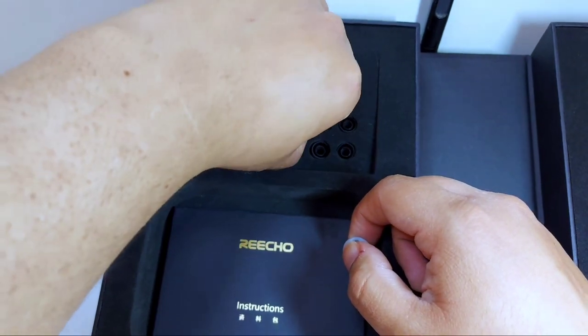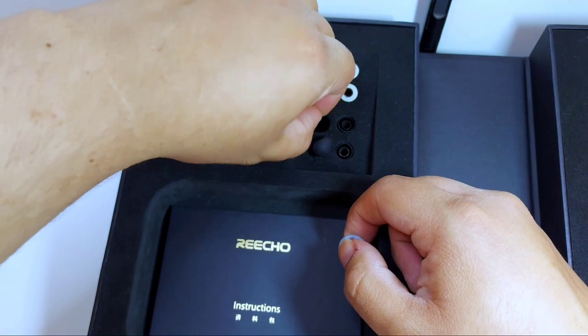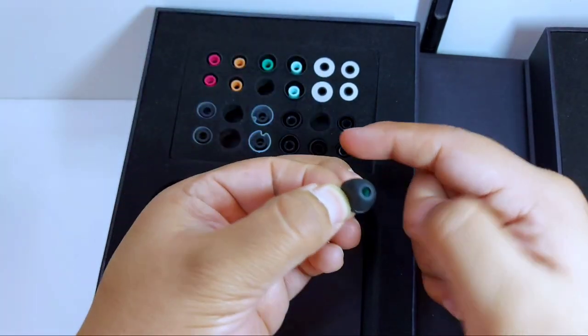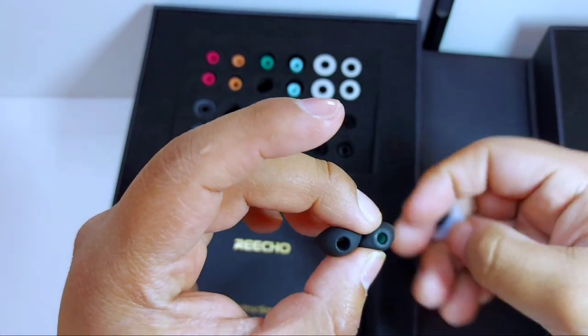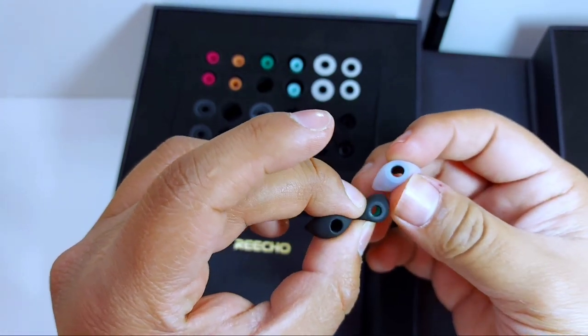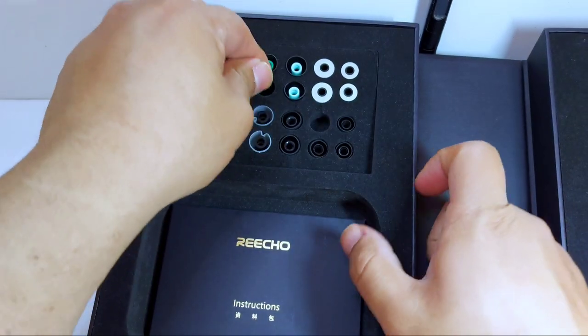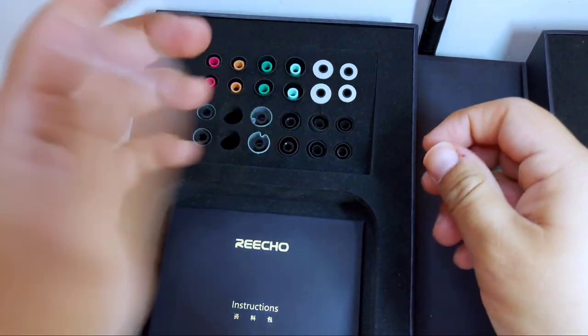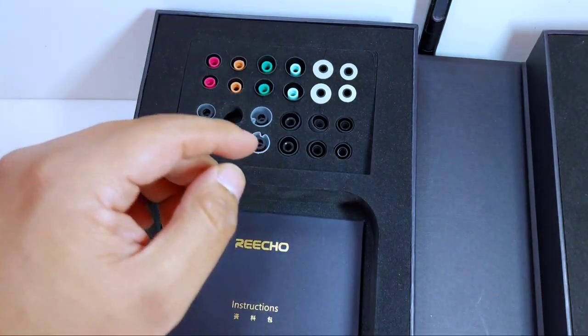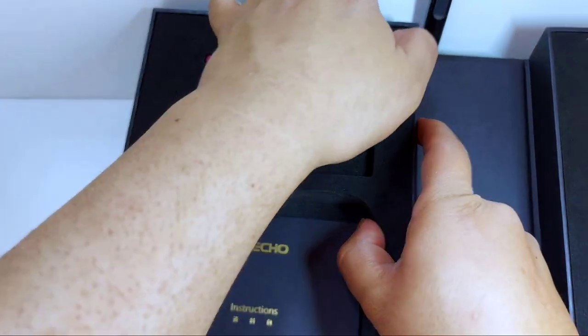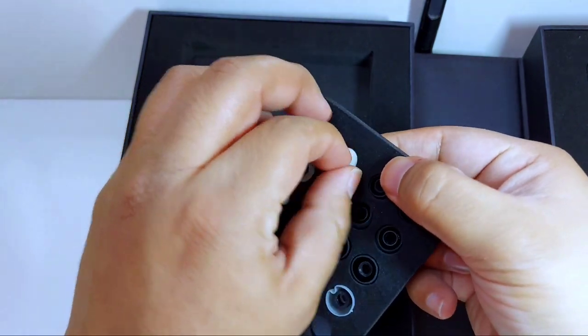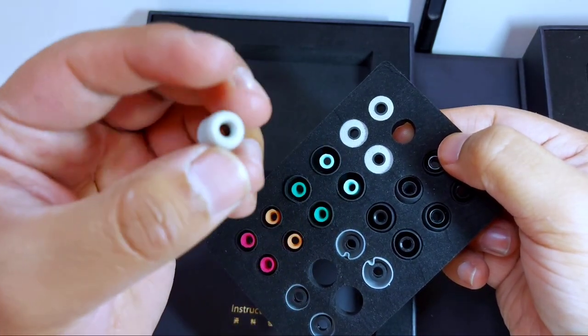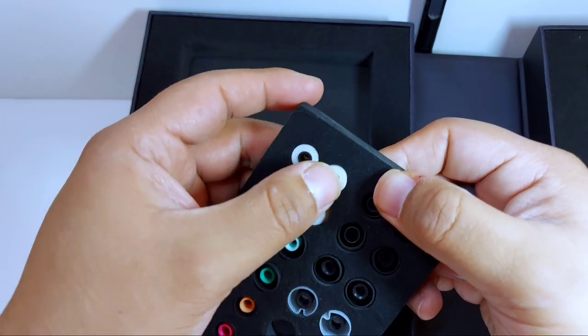Tenemos estas otras de color negro. Estas también ayudan a incrementar un poco las frecuencias bajas. Sin embargo, las podemos diferenciar. La apertura, si bien es más angosta a comparación de las blancas, es ligeramente mayor a las Colombian. Entonces, creo que las Colombianas hacen un mejor trabajo al tratarse de darle un poco más de cuerpo a las frecuencias bajas.